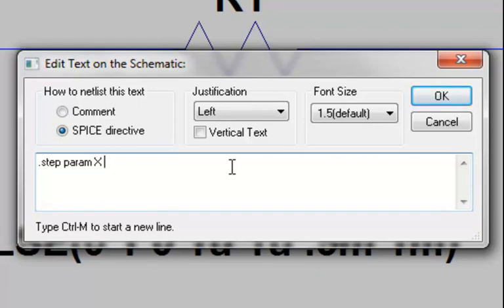Next, we need to complete the statement by specifying the steps for the parameter that we want. In this case, let's assume we want to go from 0.1 microfarad to 0.3 microfarads, and we want to do so in 0.1 microfarad steps.